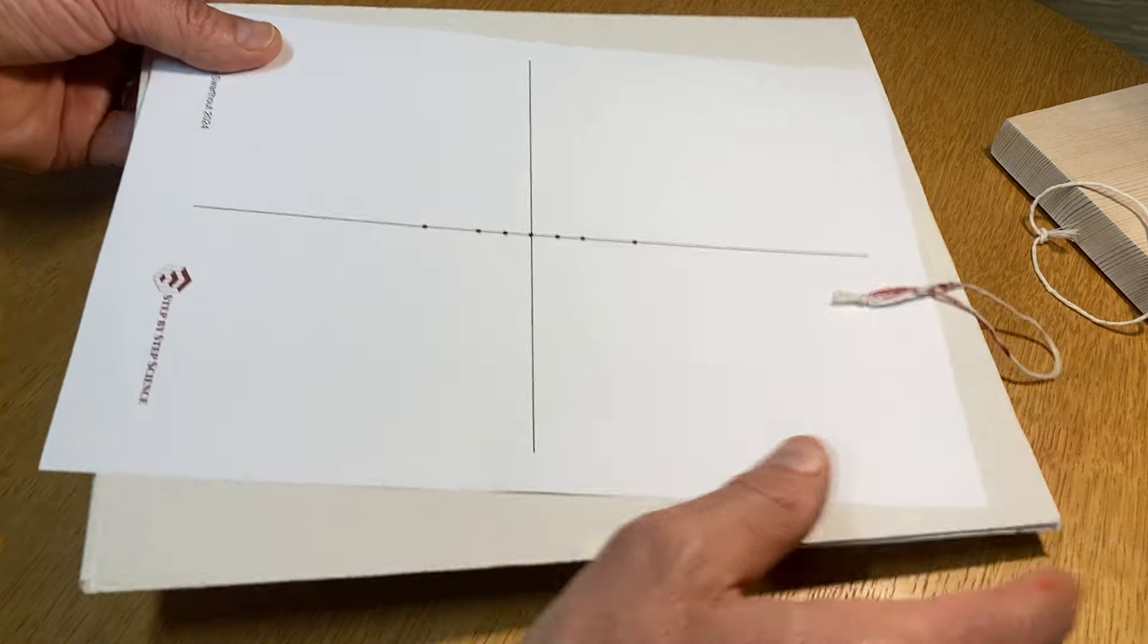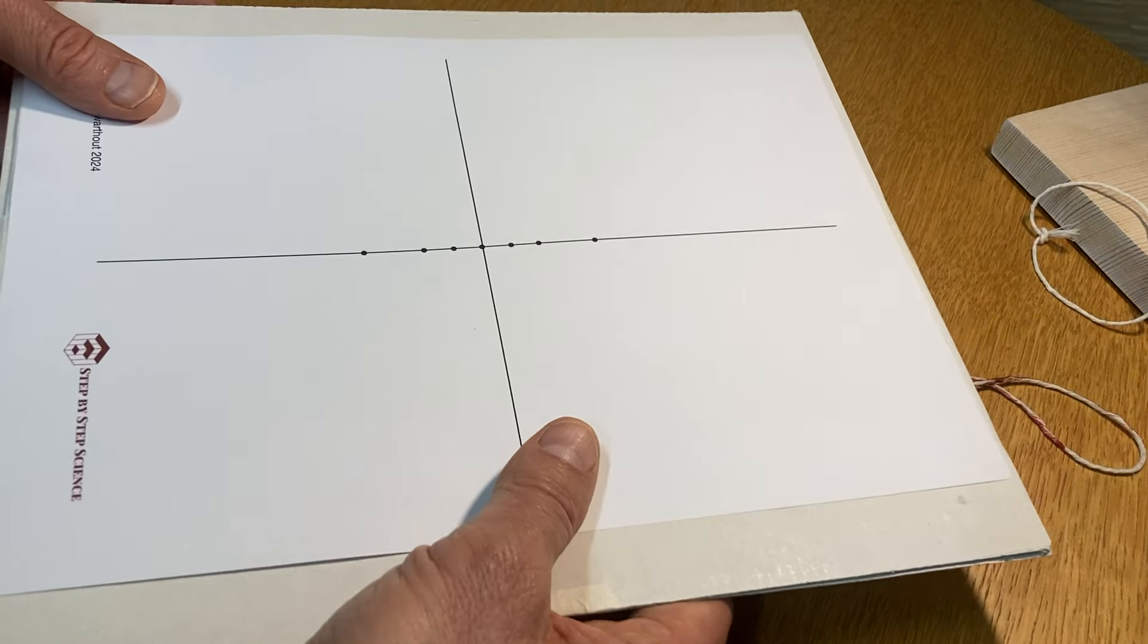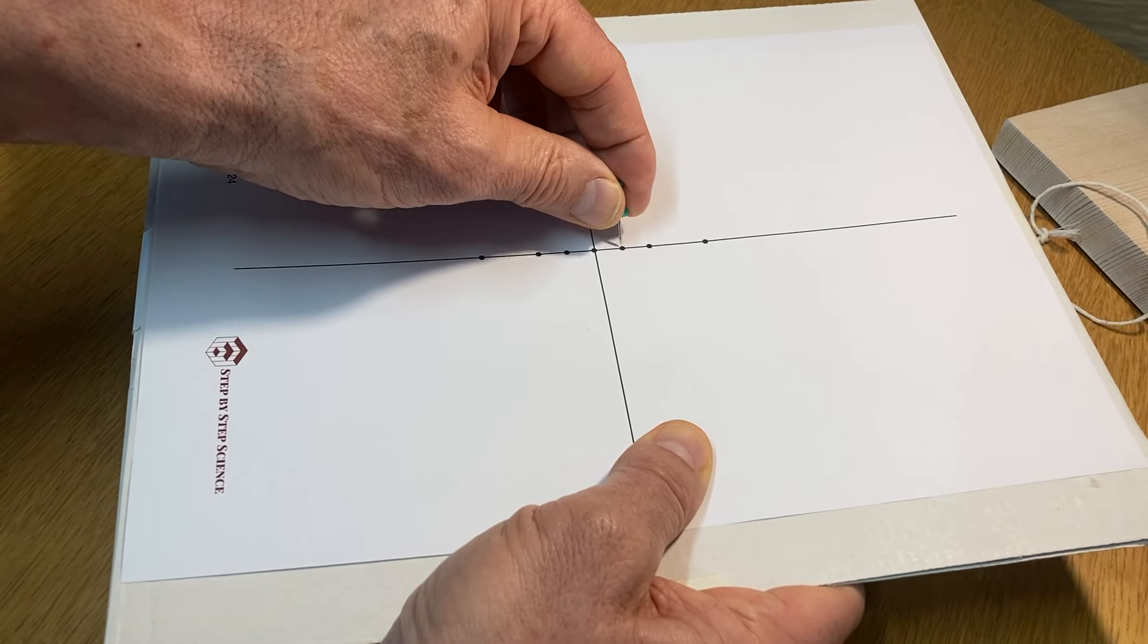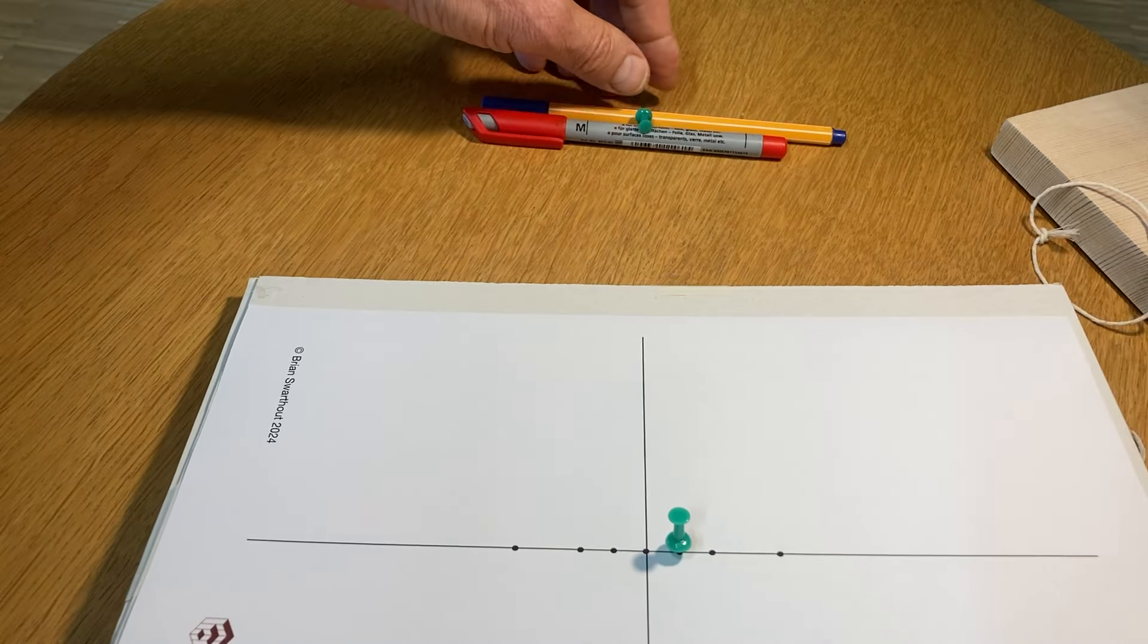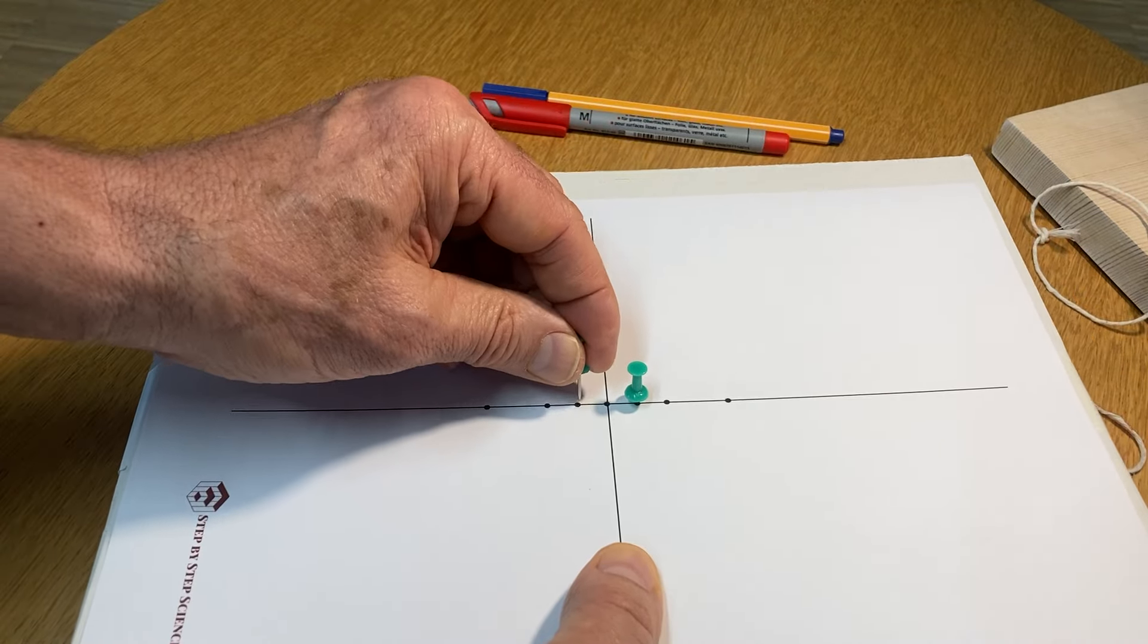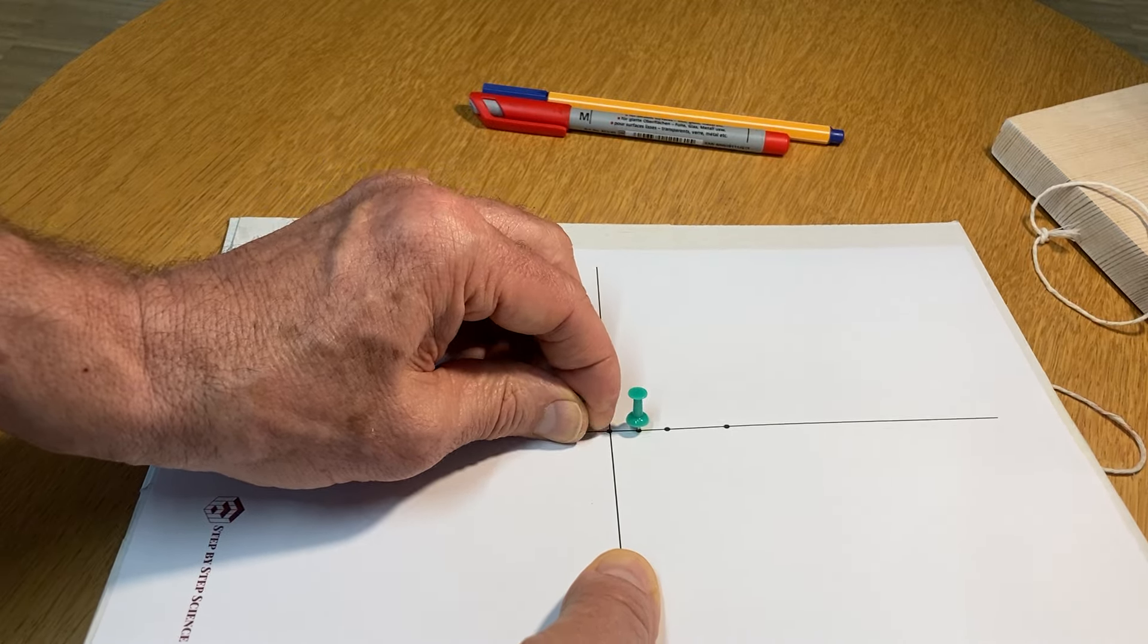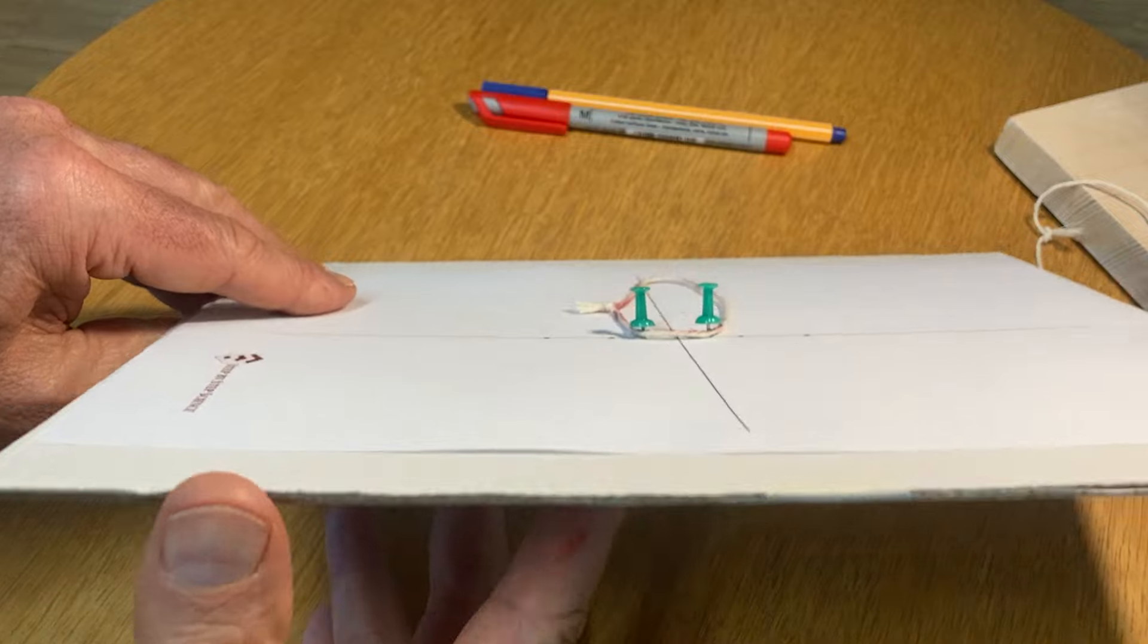Now I'm ready to draw the ellipses. I'm going to put my paper on my cardboard. You don't really need to tape it down because you're going to take the pushpins. I'm going to put one in one side that's one centimeter away. I'm going to take the other one and put it in the other foci that's one centimeter away.